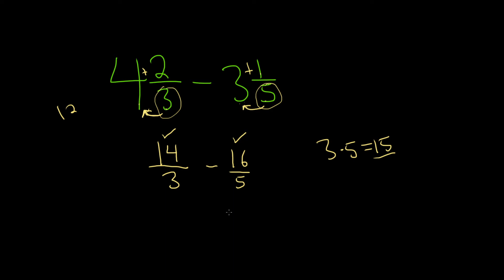And so the goal now is to make the bottoms 15. So here, you look at the 3, and you say, what's missing? Well, you're missing a 5. So you multiply by 5 over 5. And over here on the right, you have a 5, so what's missing? You're missing a 3. So you multiply by 3 over 3.